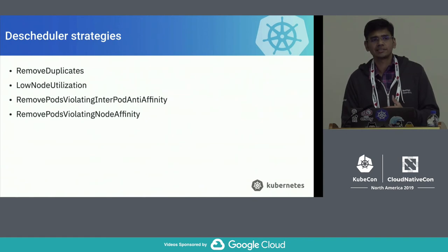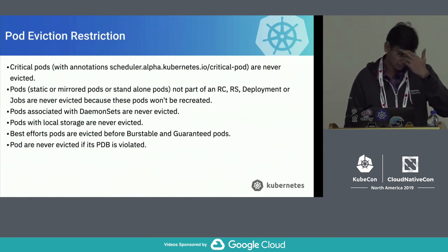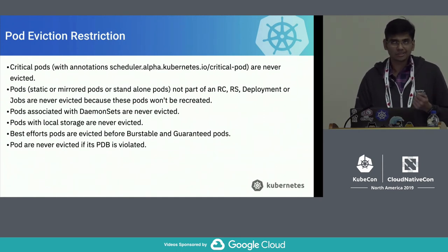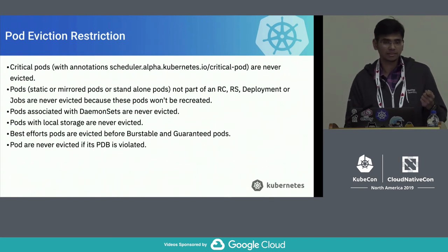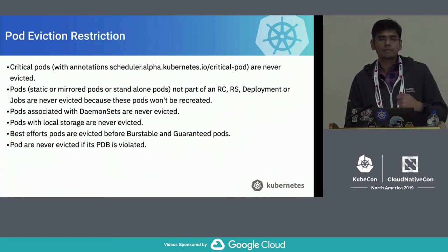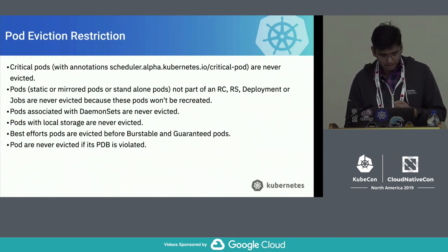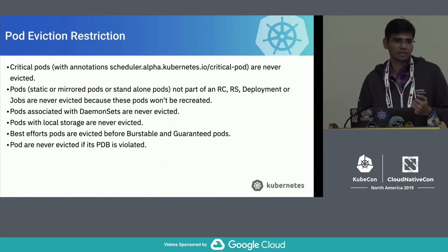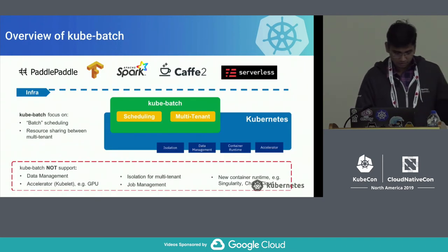When evicting, the descheduler ensures certain pod types are not evicted — such as critical pods, static pods, daemonset pods, and pods with local storage. It also respects QoS tiers: best-effort pods are evicted first, then burstable, then guaranteed. If evicting a pod would violate its PodDisruptionBudget, it will not evict that pod.